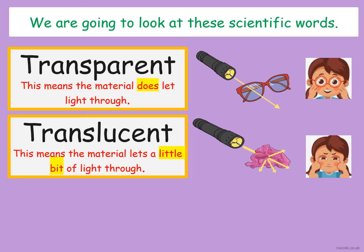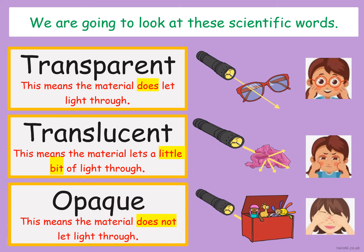And the last word is opaque. Opaque means the material does not let light through. So having a look at the picture, you can see that the torch light is shining and the toy box is made of an opaque material — so it has blocked the light. The light is not going to go through the material of the toy box, so you cannot see the light shining through the material.